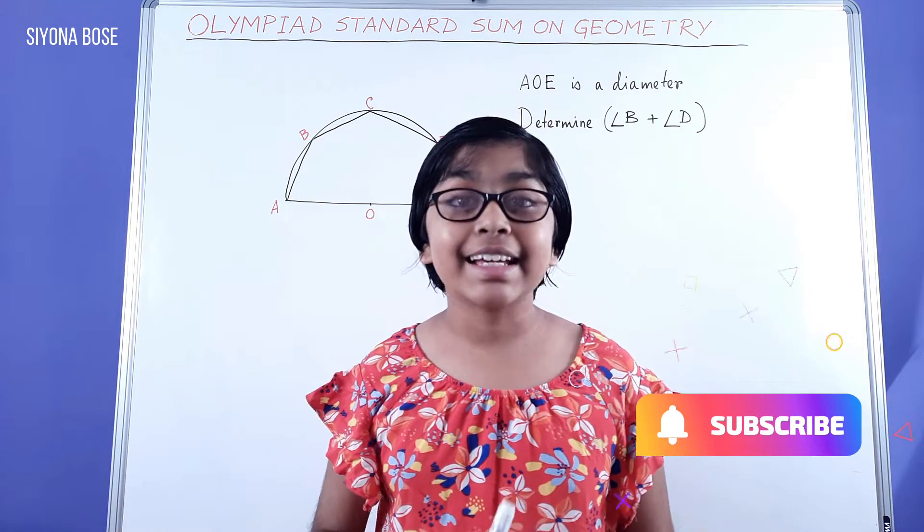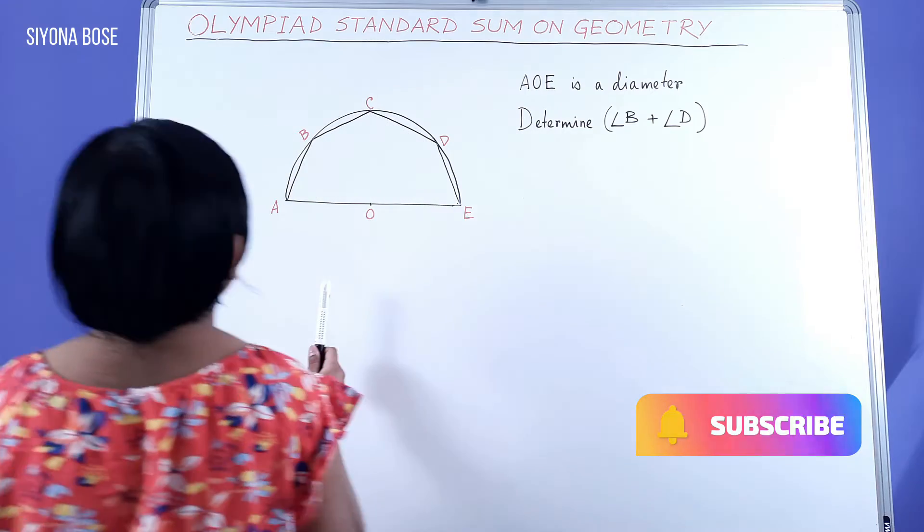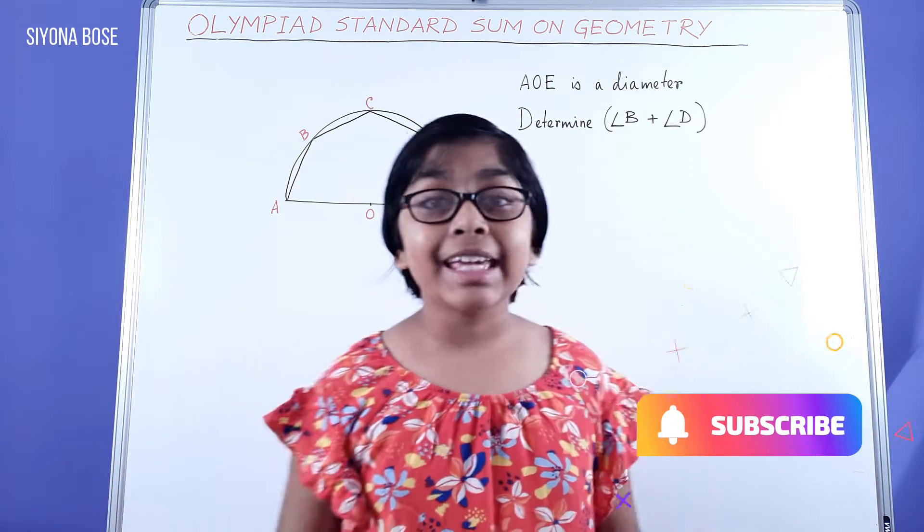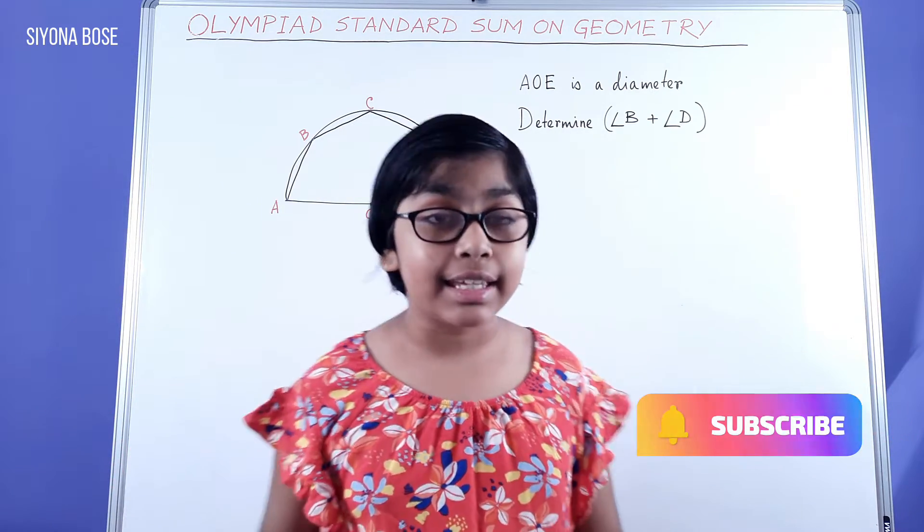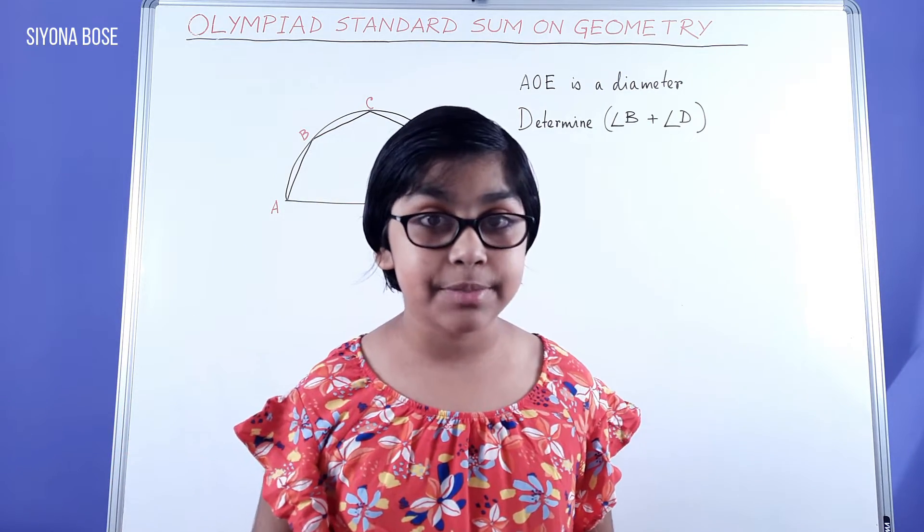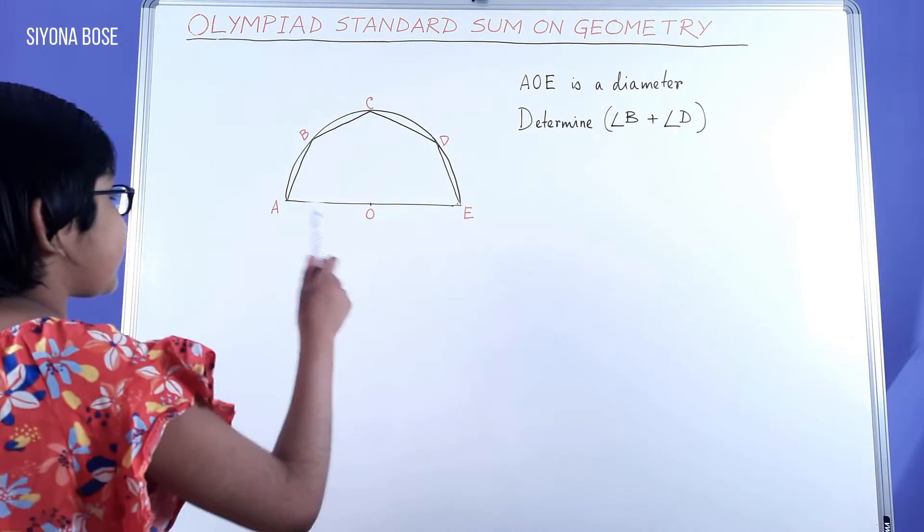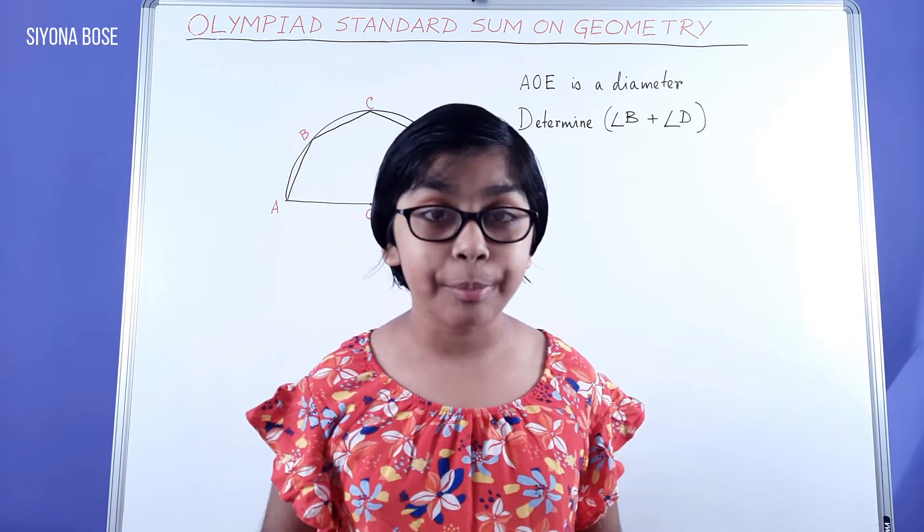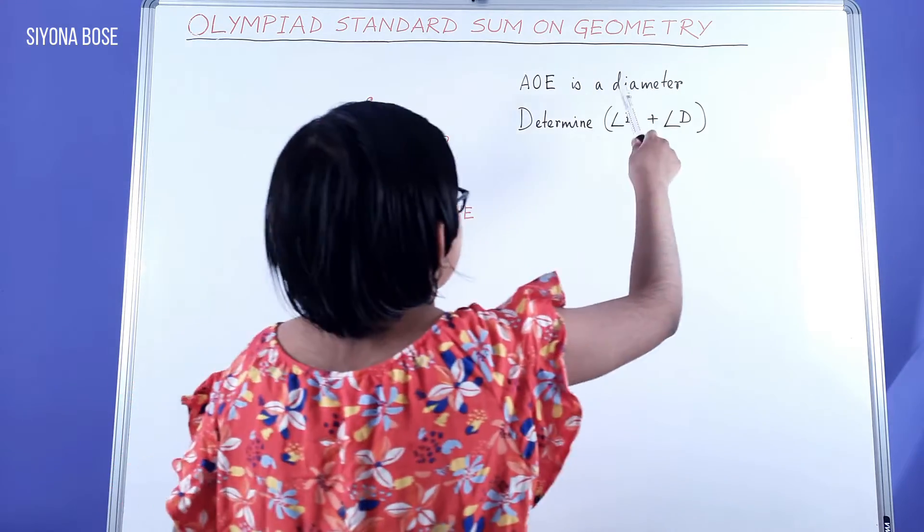Here we can see a diagram of a semicircle with points A, B, C, D, and E on the circumference, which are joined by line segments, and O is the center of the semicircle. AOE is the diameter.